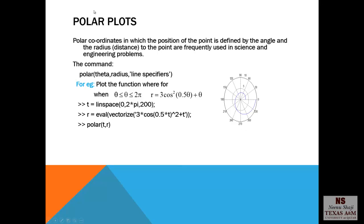Next we have the polar plots. Polar coordinates in which the position of the point is defined by the angle and the radius that is the distance to the point are frequently used in science and engineering problems. The command polar theta comma radius and then the line specifiers. Plot the function where for when theta is between 0 to 2 pi, r is 3 cosine square 0.5 theta plus theta. So define t then evaluate r using the eval vectorize command and polar t comma r.